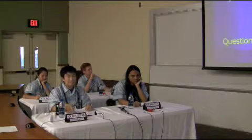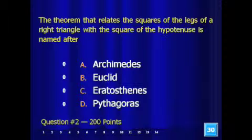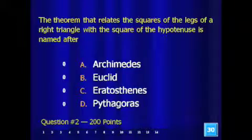And as I said, here's the real thing. Question 2 for 200 points. The theorem that relates the squares of the legs of a right triangle to the square of the hypotenuse is named after: A, Archimedes; B, Euclid; C, Eratosthenes; or D, Pythagoras.